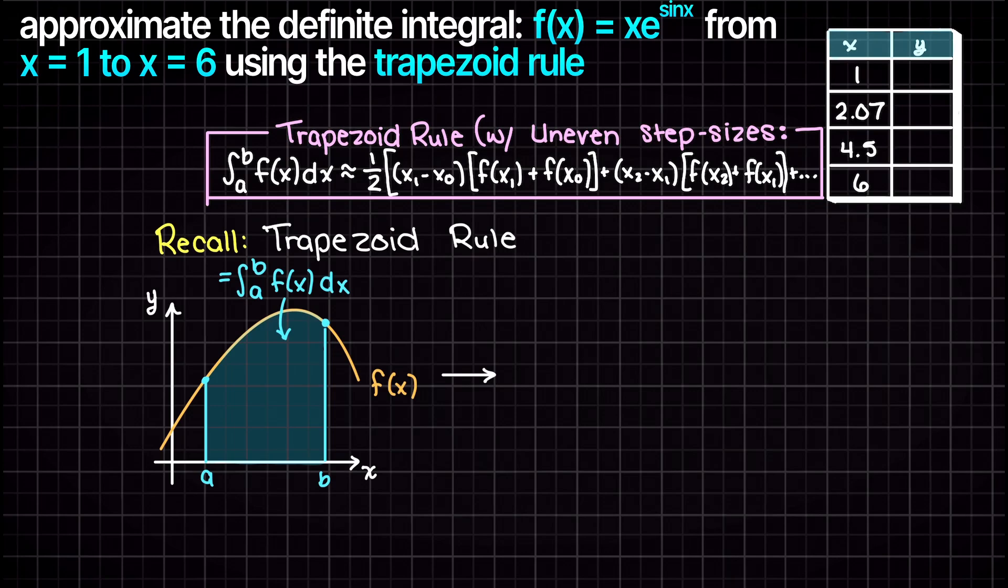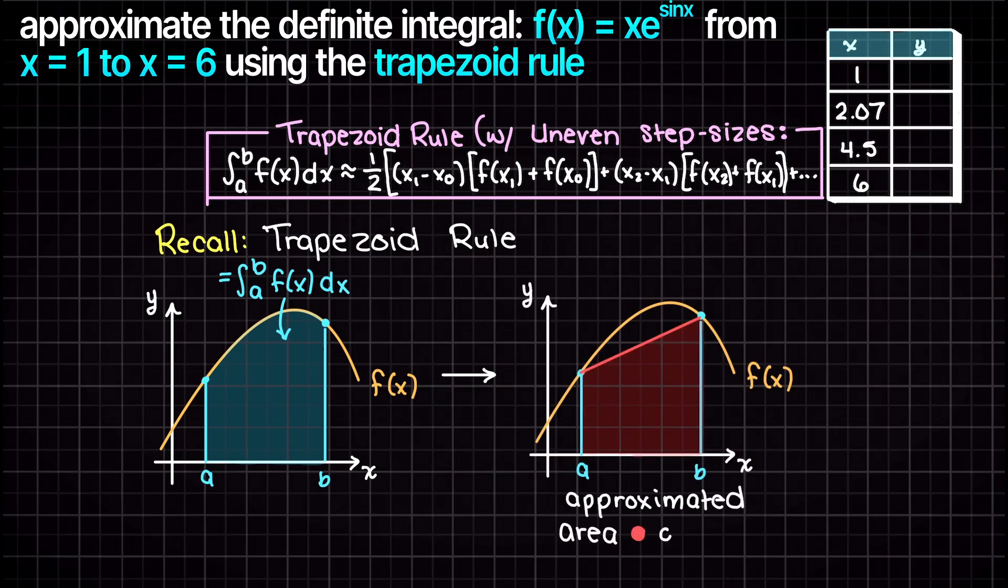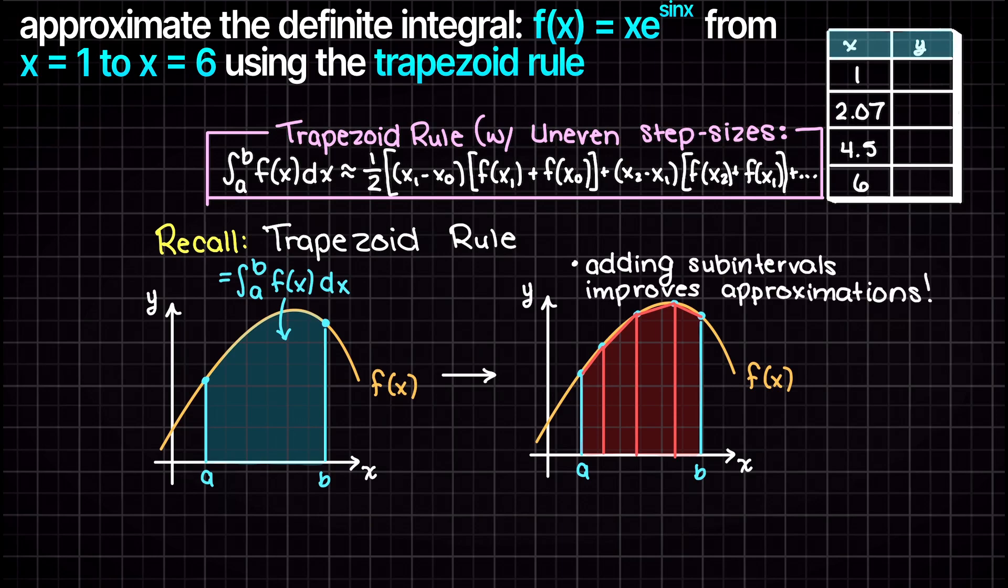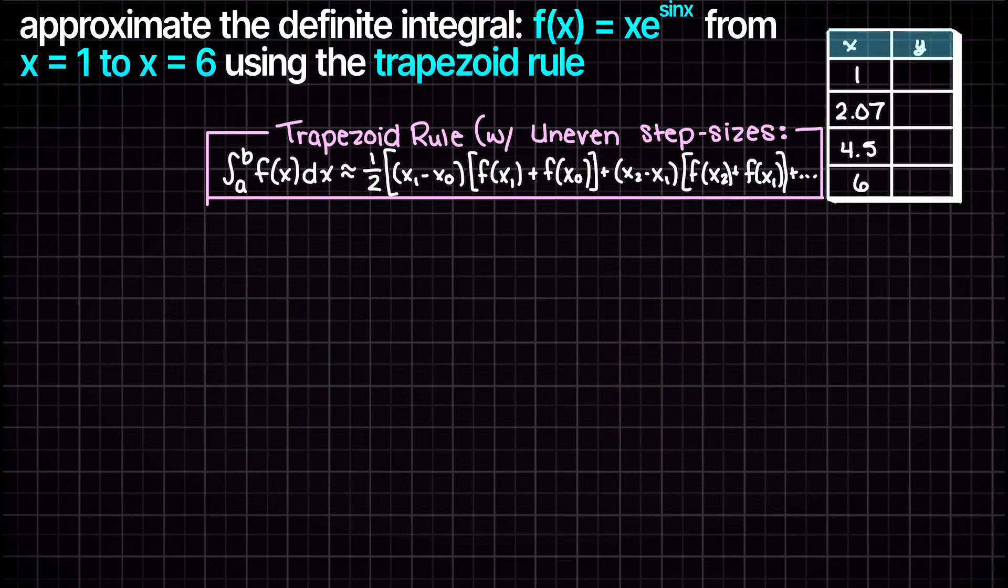Visually the trapezoid rule can be viewed as approximating this blue area here by chopping it up into smaller trapezoid shapes and summing them together. The accuracy of this improves with more trapezoids, meaning our selected step size is a trade-off as smaller step sizes will give us more accurate solutions, at the cost of more work or computation time.